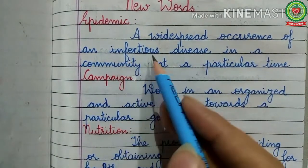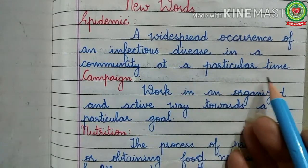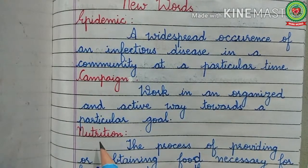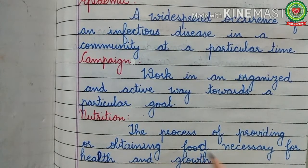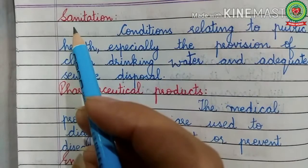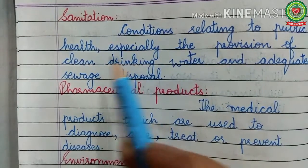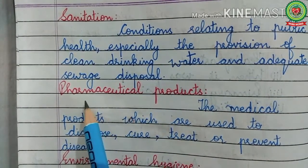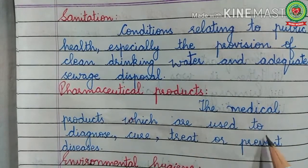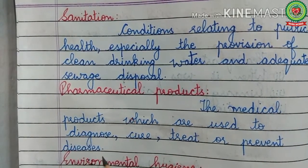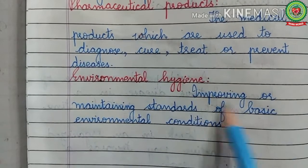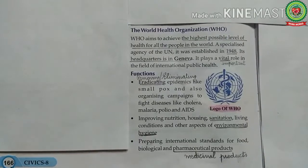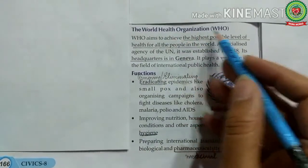New words: Epidemic — a widespread occurrence of an infectious disease in a community at a particular time. Campaign — working in an organized and active way towards a particular goal. Nutrition — the process of providing or obtaining food necessary for health and growth. Sanitation — conditions relating to public health, especially the provision of clean drinking water and adequate sewage disposal. Pharmaceutical products — medical products used to diagnose, cure, treat, or prevent diseases. Environmental hygiene — improving or maintaining standards of basic environmental conditions.